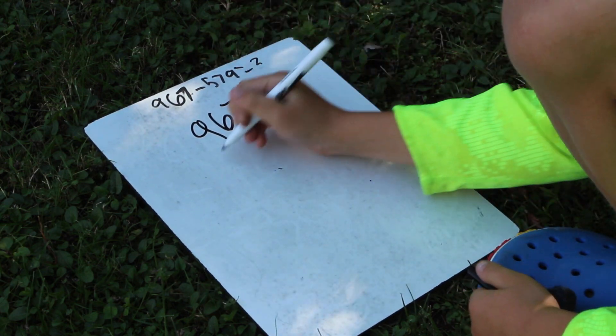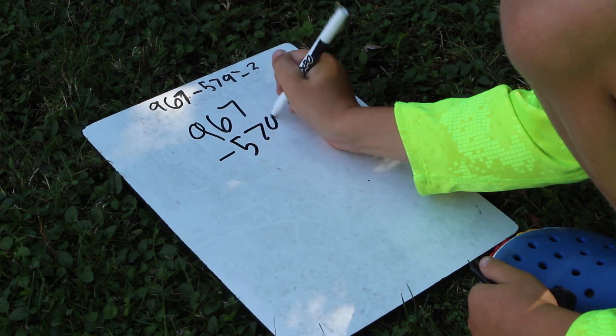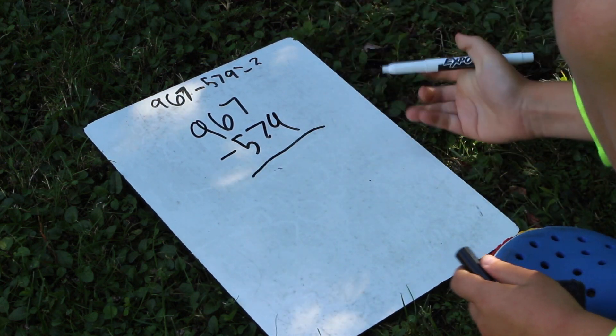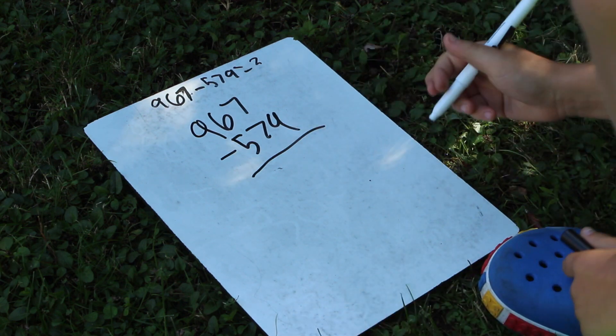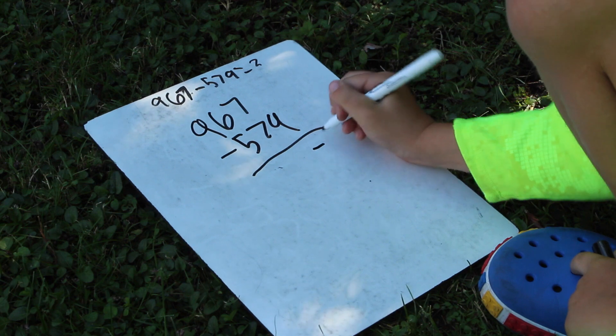967 minus 579 which are the same numbers we used last time. So 7 minus 9, well this time we're gonna use negative numbers, is minus 2.